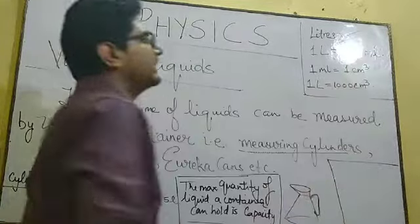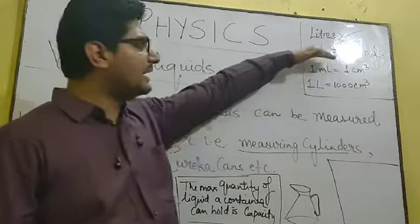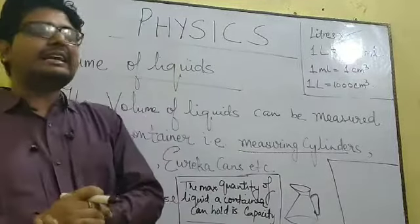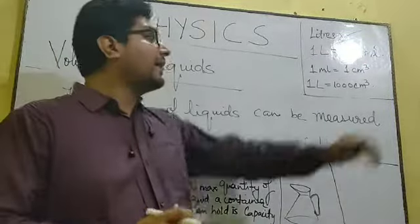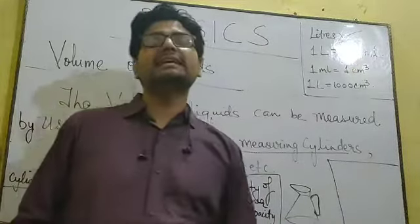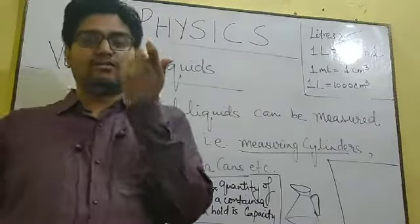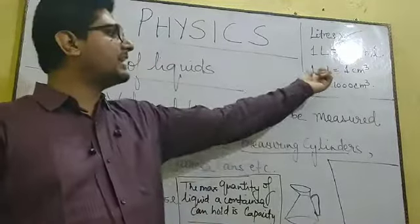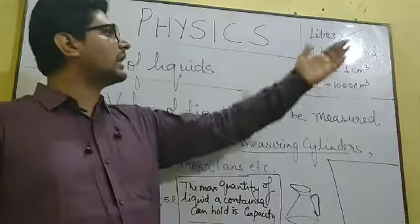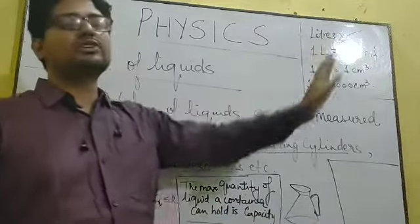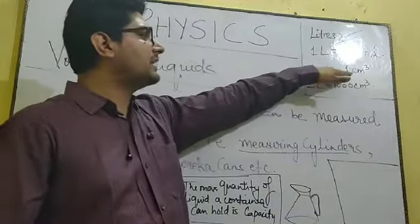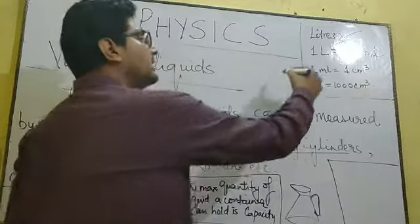The standard unit for calculating the volume of liquid is litres. One litre is equal to one thousand millilitres. One millilitre is equal to one centimetre cube. So whenever we take a volume of one centimetre cube, that equals one millilitre. A thousand centimetre cubes equals one thousand millilitres, which equals one litre. So one litre equals one thousand centimetre cubes, and one millilitre equals one centimetre cube — this we have to remember.